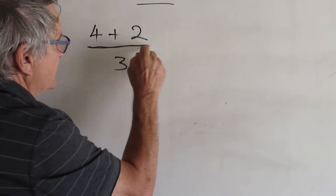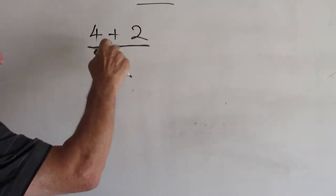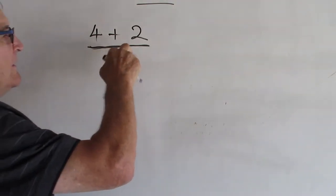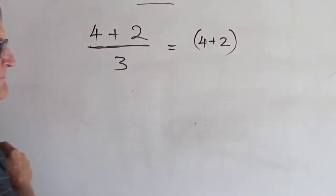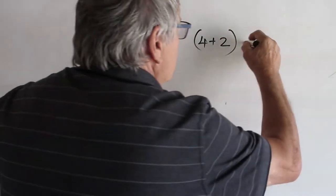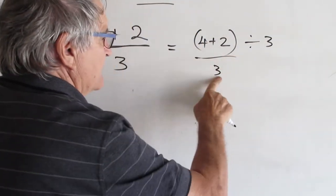This line, which separates the numerator and denominator in a fraction, is called the vinculum. And it acts as a bracket. So what this is telling us is that we have 4 plus 2 as a separate entity, and then it's divided by 3. Or if you like, it's divided by 3. Whichever way.